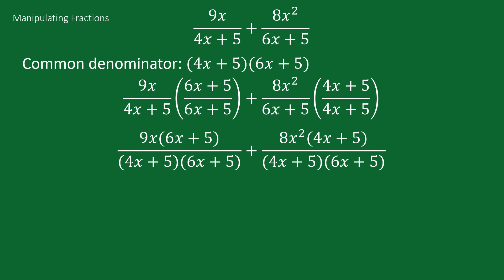Now we can simplify by distributing the 9x and 8x squared respectively. So we get 54x squared plus 45x plus 32x cubed plus 40x squared all over 24x squared plus 20x plus 25.